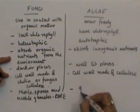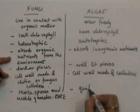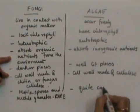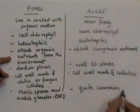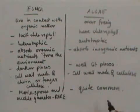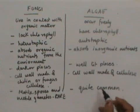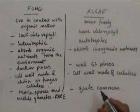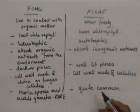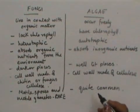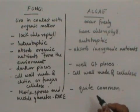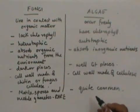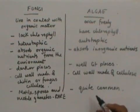Whereas in the case of algae, motile spores and gametes are quite common. So these are the differences between the fungi and the algae. And now let us study the three classes under the division of algae.